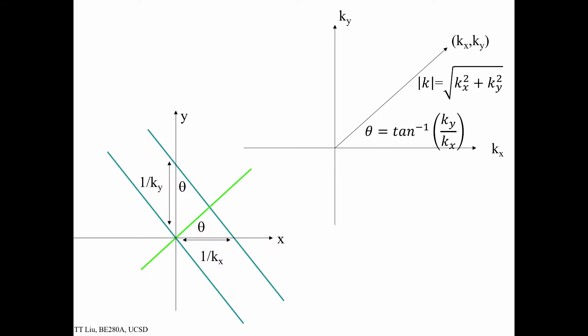It's useful to start by thinking about a point in k-space, kx, ky. This point will be at some angle theta equal to arctangent of kx with respect to the kx-axis. We can also think of this as a vector that has a magnitude equal to the square root of kx squared plus ky squared, which is simply the Pythagorean theorem.